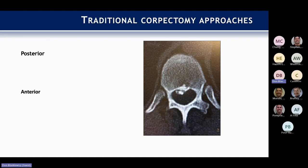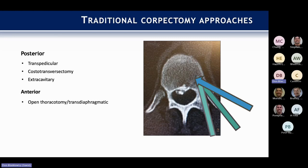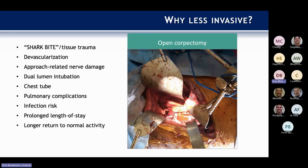Traditional corpectomy approaches from the posterior include transpedicular, costotransversectomy, and lateral extracavitary. Anteriorly, there's open thoracotomy, transdiaphragmatic, and endoscopic. Why do we want to go less invasive? The big tissue trauma, devascularization, approach-related nerve damage, the need for dual lumen intubation, chest tubes, pulmonary complications, infection risk, prolonged length of stay, and longer return to normal activity.